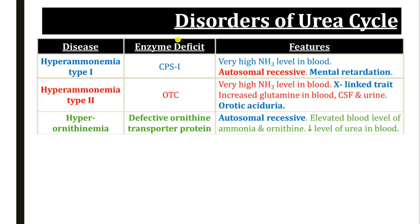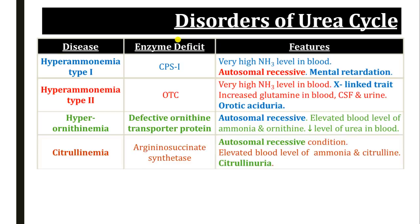The third disorder is hyperornithinemia. Ornithine from the cytoplasm is transported to the mitochondria with the help of ornithine transporter protein, and a defect in that transporter leads to hyperornithinemia. It is an autosomal recessive disorder, resulting in increased levels of ammonia and ornithine in the blood, and decreased urea levels. The fourth disorder is citrullinemia, due to deficiency of argininosuccinate synthetase enzyme of the urea cycle. It is an autosomal recessive disorder causing increased levels of ammonia and citrulline in the blood, leading to citrullinuria. Since milk is a source of citrulline, milk must be avoided in patients with citrullinemia.